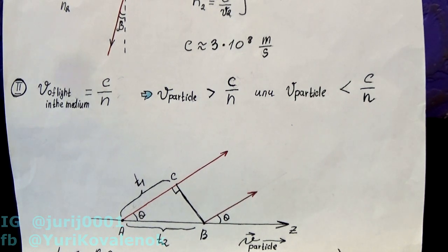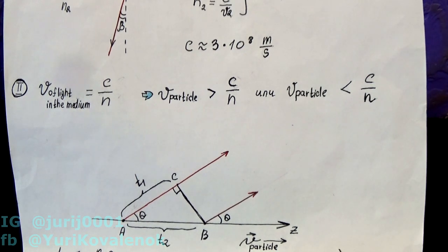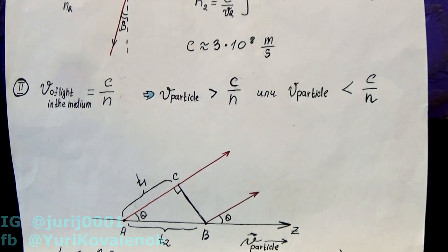In fact there is no contradiction. The statement of the classical theory of electrodynamics that only an accelerated charged particle emits light is valid only for a vacuum. The Cherenkov glow does not occur in a vacuum but occurs in a medium, and under the condition that the velocity of a charged particle in the medium is greater than the speed of light in this medium.